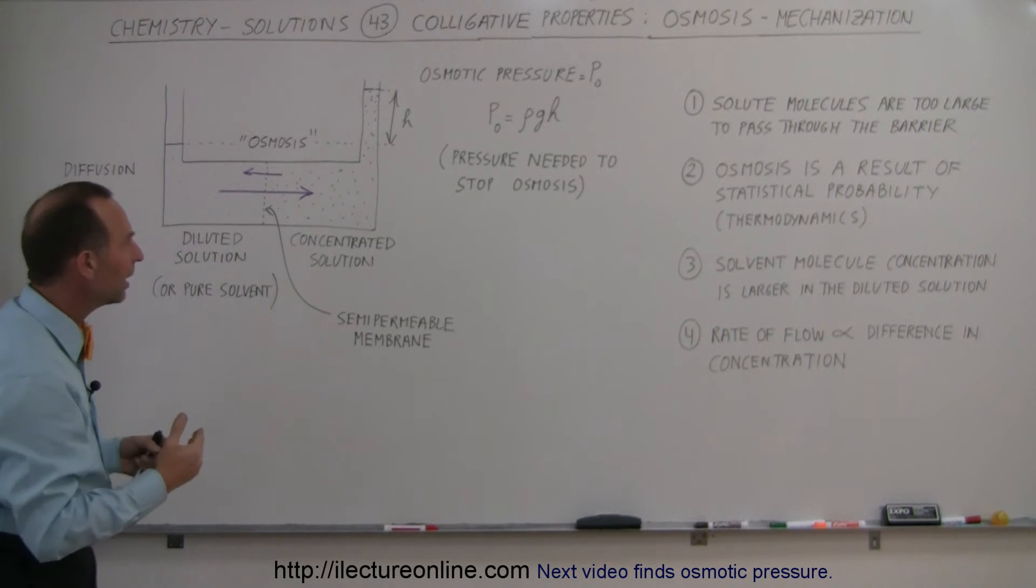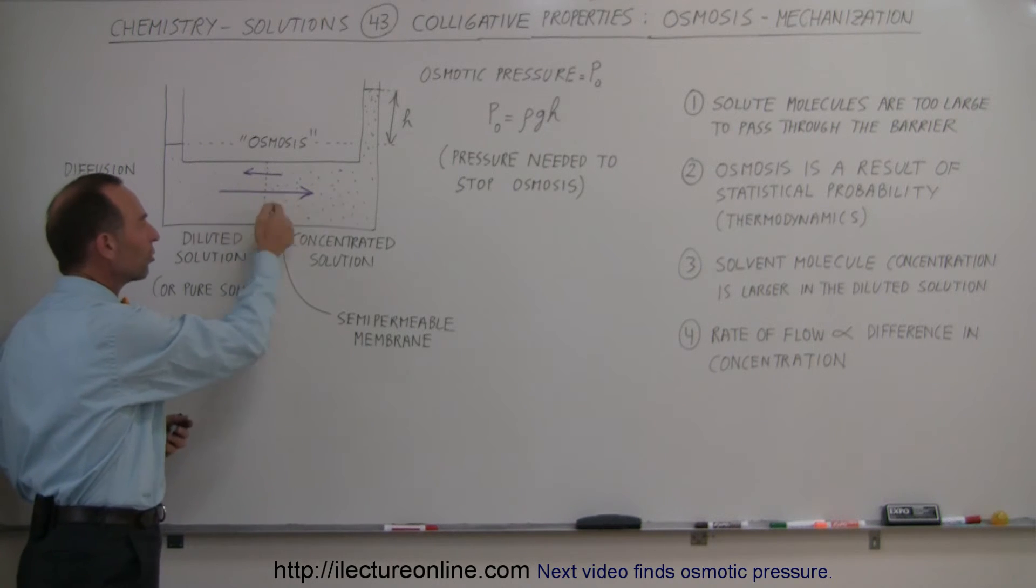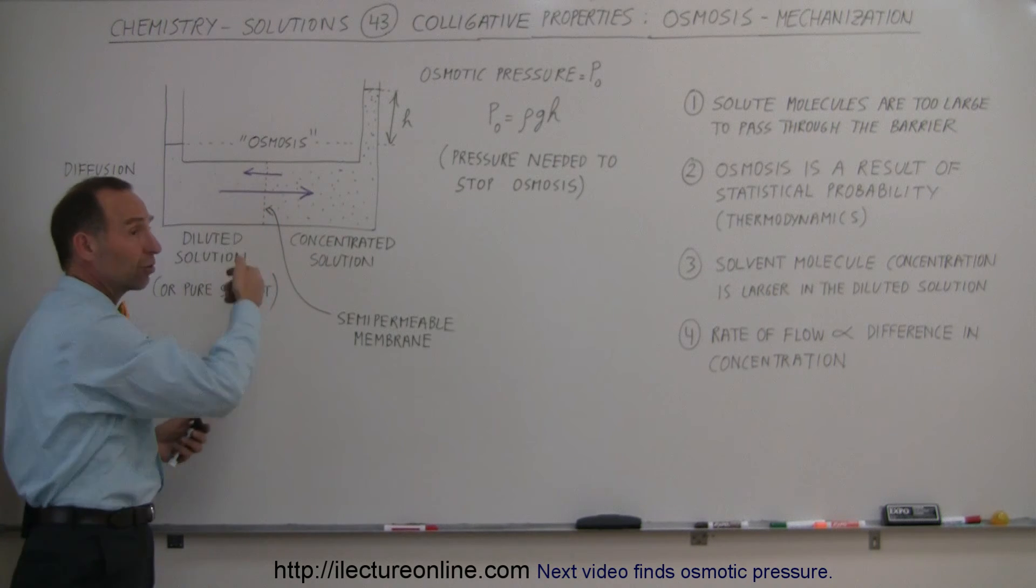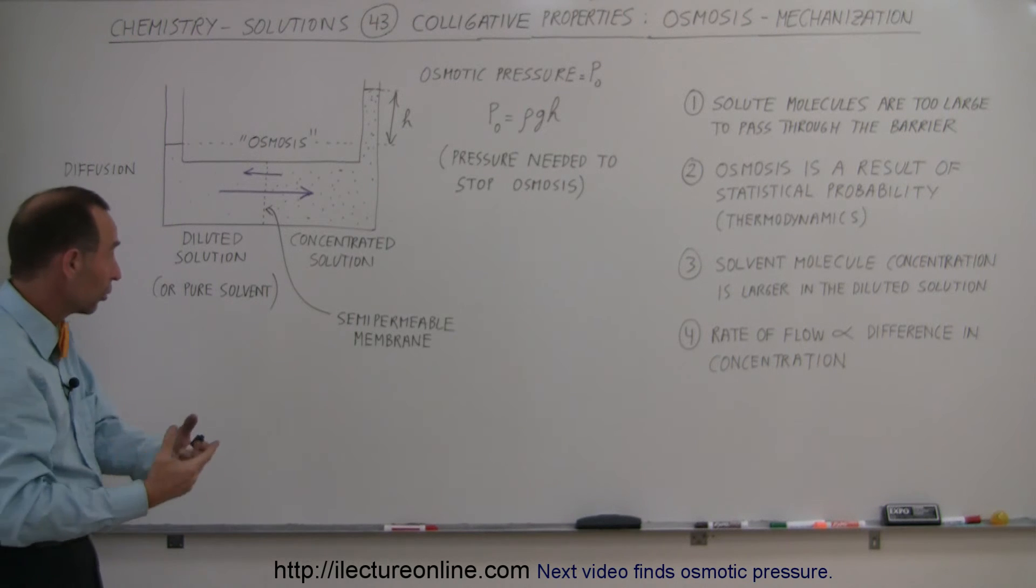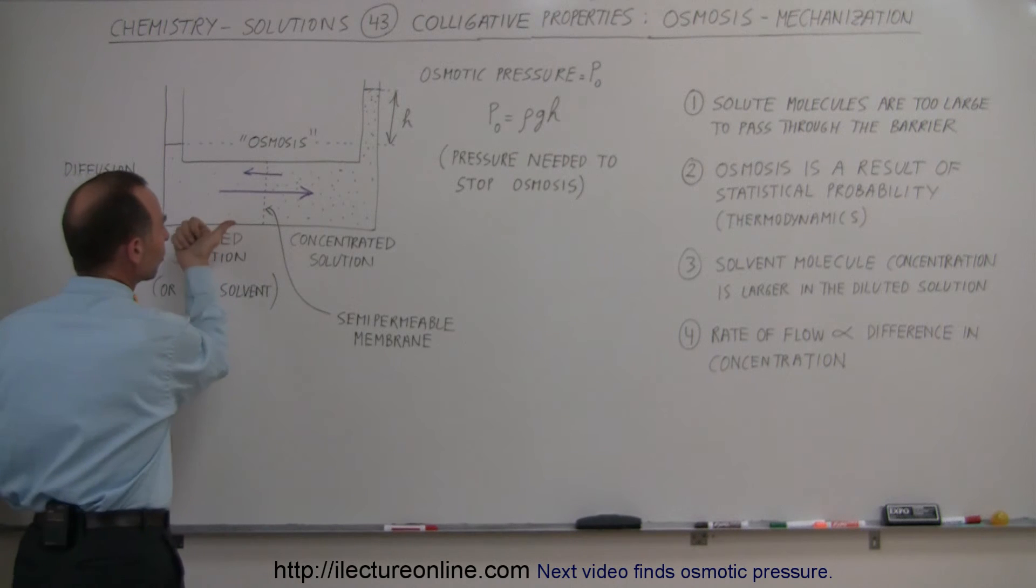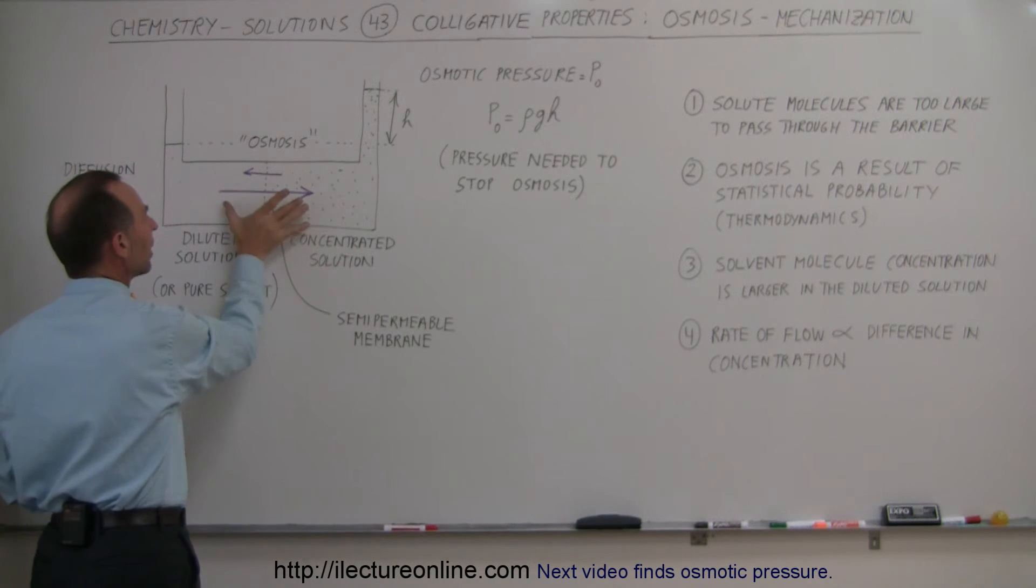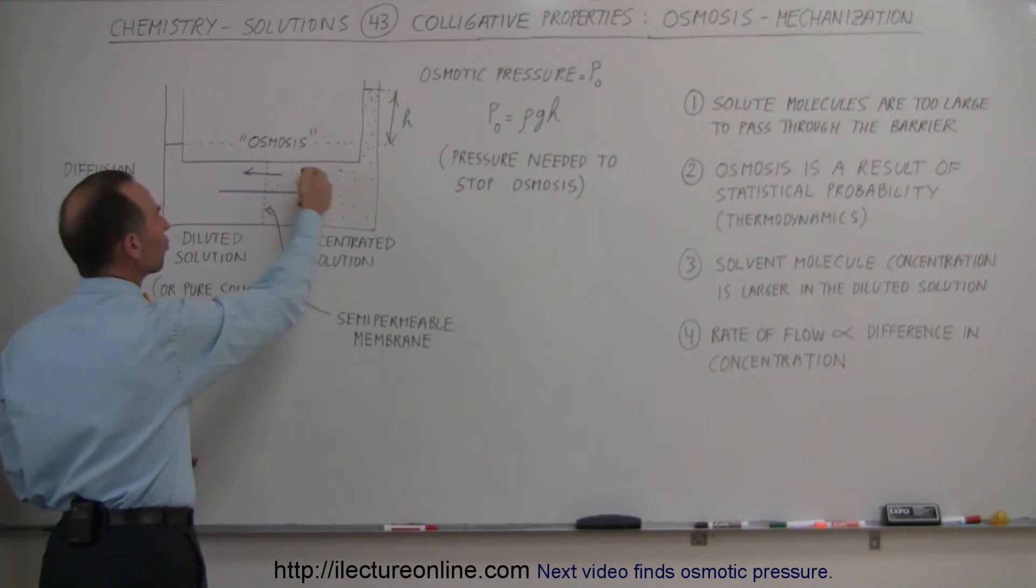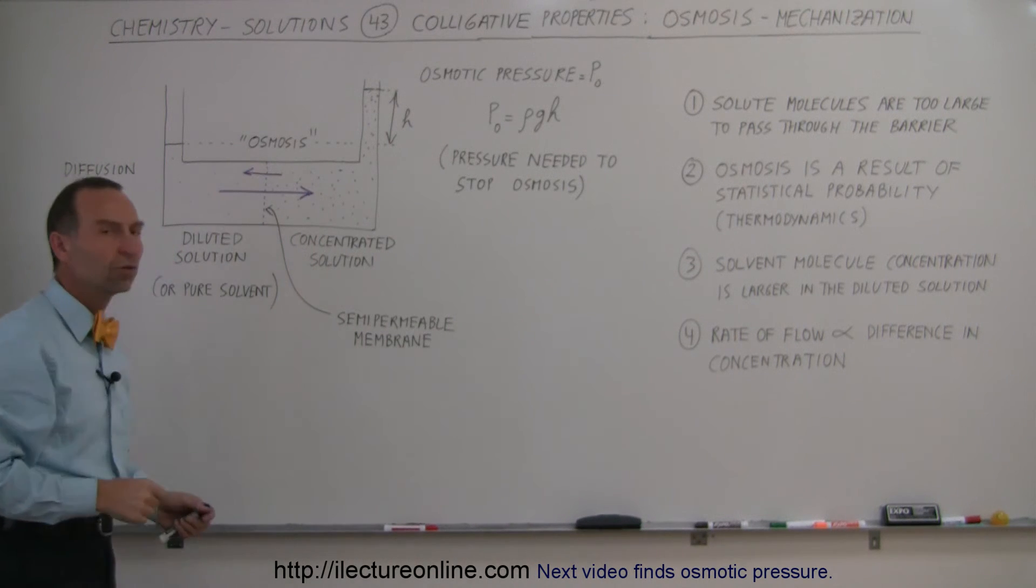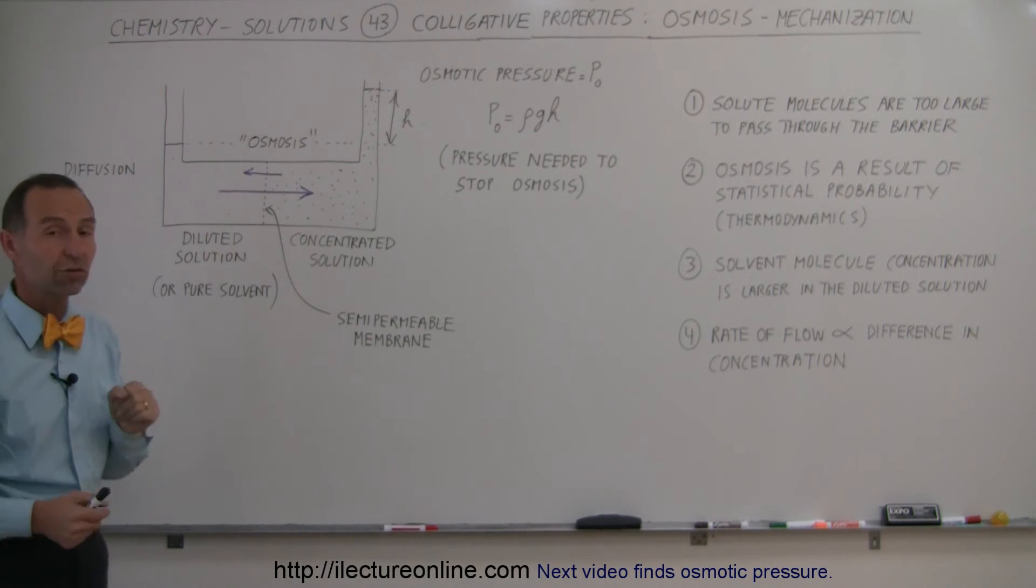So therefore, statistically, there's a greater chance that a water molecule will be moving in this direction than in that direction, simply because there's more water molecules on the left side than on the right side per unit volume. There's going to be more molecules traveling this way across the boundary than traveling that way across the boundary. The arrows indicate a greater number of molecules traveling from left to right, a smaller number traveling from right to left. And that will continue as long as there's a difference in concentration of the two solutions.